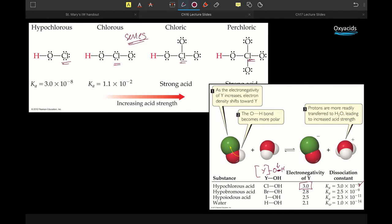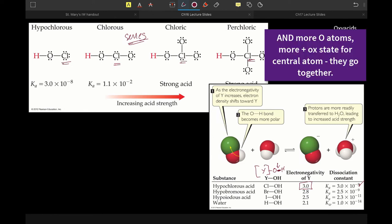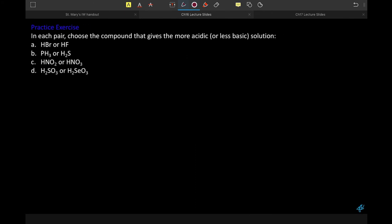That oxygen also allows for the option of resonance structures, which means that we end up with a more stable conjugate base after it has been deprotonated. So for all those reasons, if we're comparing a series of oxyacids with the same central atom, then the more oxygens there are, the stronger the acid.